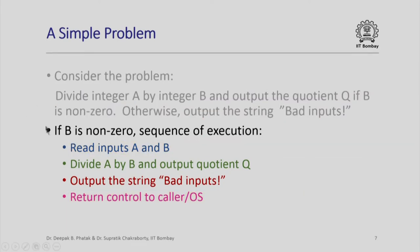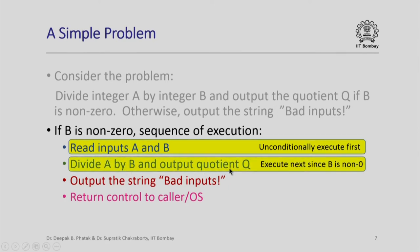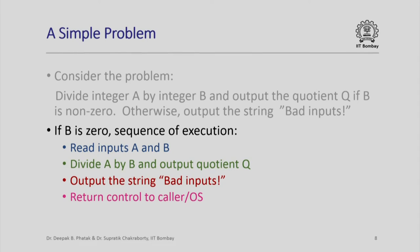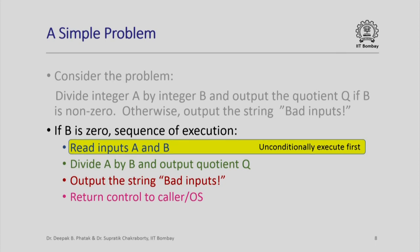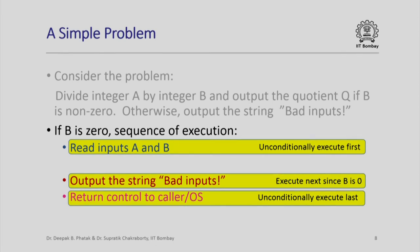If b is non-zero, the sequence is: read inputs a and b unconditionally, then execute the divide-and-output instruction, skipping the "bad inputs" output, and finally return control to the operating system. On the other hand, if b is 0, we unconditionally read inputs a and b, then output the string "bad inputs" instead of dividing, and then return control back to the operating system.